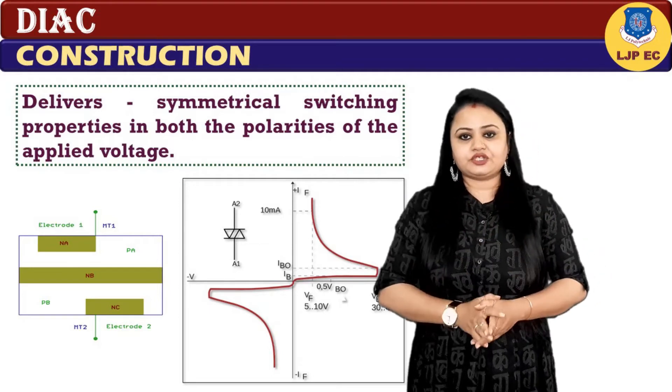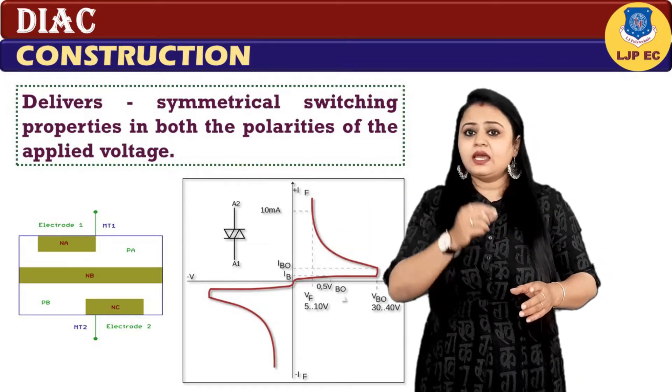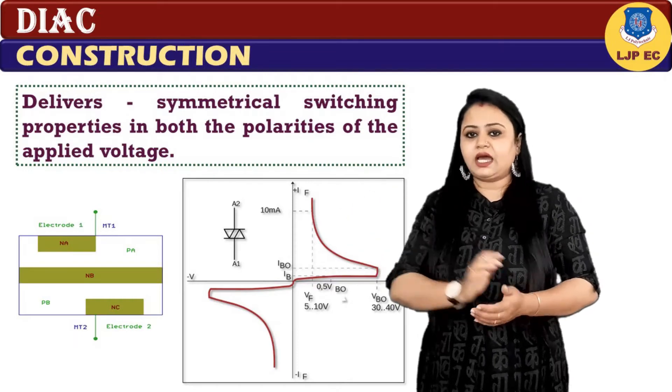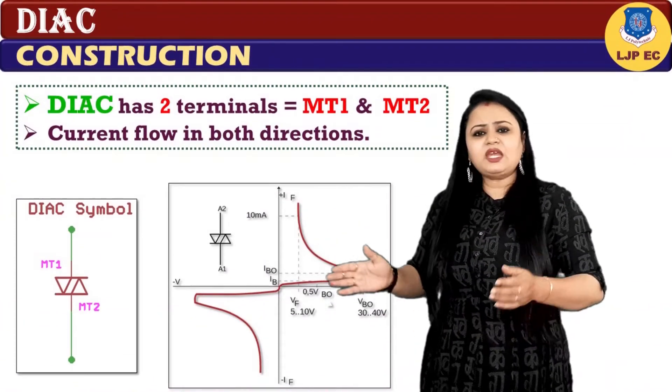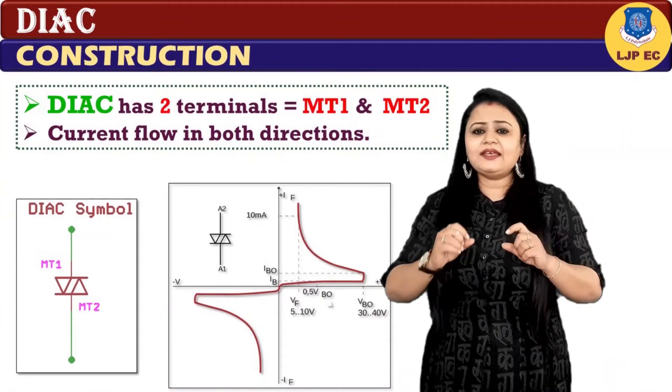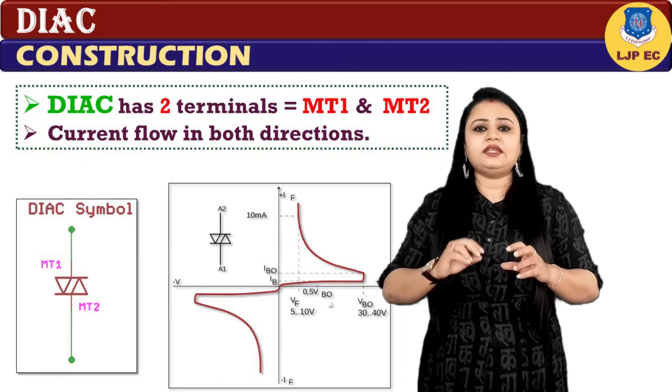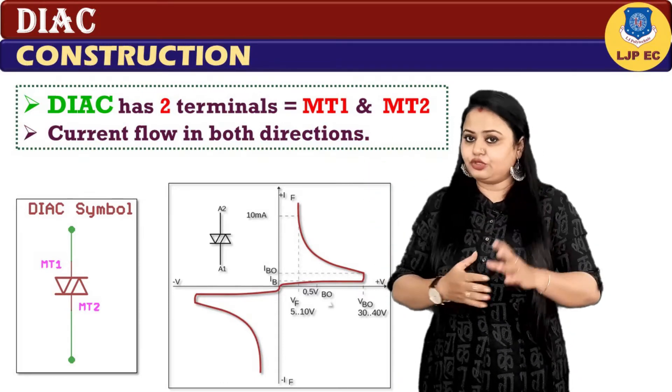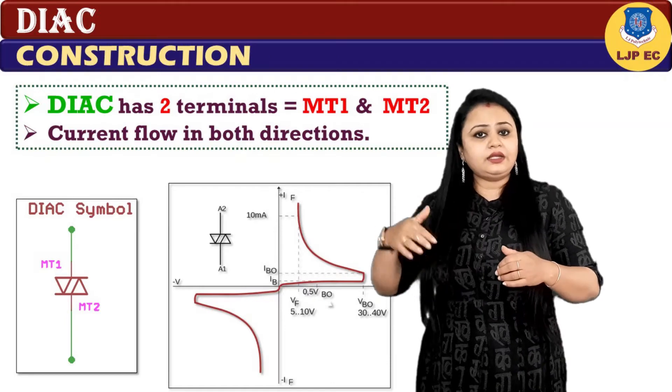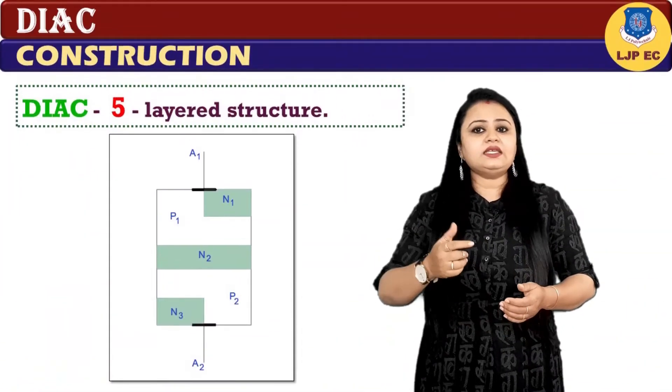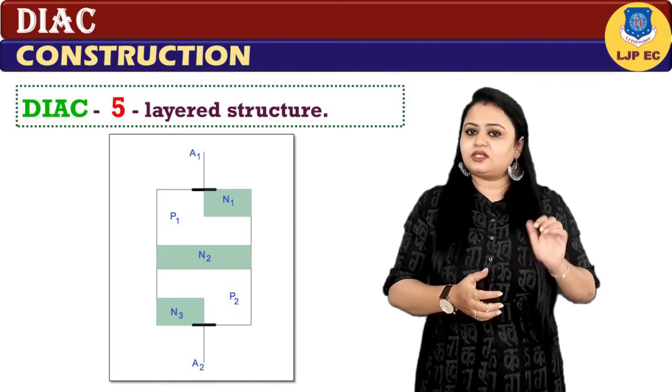The above diagram represents typical construction of the DIAC. As mentioned earlier, DIAC has two terminals, namely MT1 and MT2, and it can deliver current in both directions. The DIAC is made up of a five-layered structure.